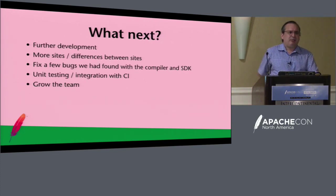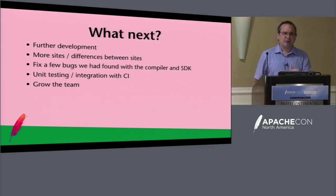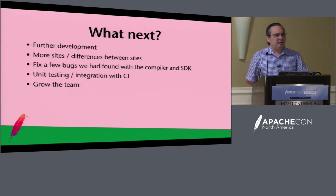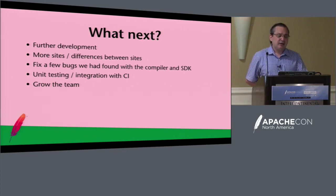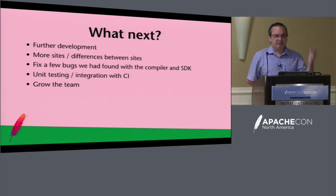So what's next? There's going to be further development — we're making releases about every two weeks. We currently have about six sites, and in the next couple of months it'll expand to about a dozen with lots of differences requiring more feature toggles and styling differences. We're going to try and fix a few bugs found in the compiler and SDK. I'd really like to get FlexUnit working properly and get unit testing integrated with the CI — so hopefully next ApacheCon that's what my talk will be about. We also want to grow the team, so if you're interested come have a word with me.